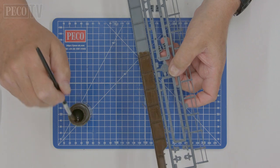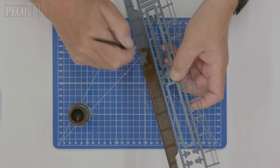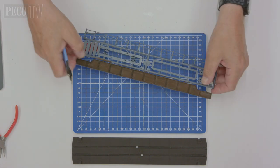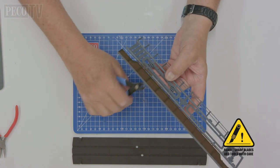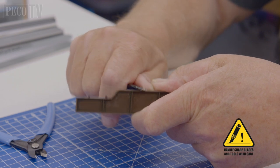We are painting and weathering our components as we go as it is far easier to paint as individual components rather than trying to paint when constructed. We start off with the bridge.